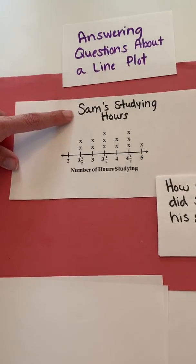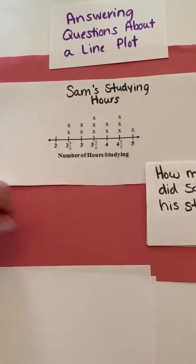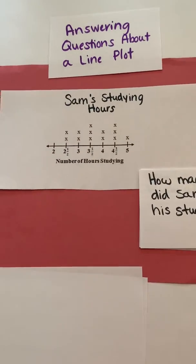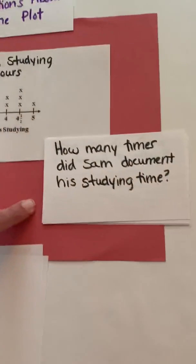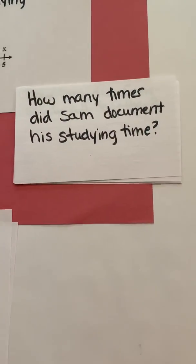So Sam's studying hours and then these are the number of hours that Sam spent studying the different times. So each x represents a different time he studied and for the length of time he studied. So now we're going to look at some questions and read through these questions and answer them based off this line plot.